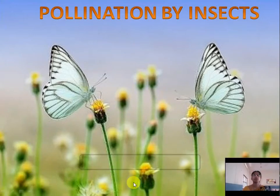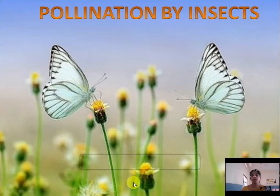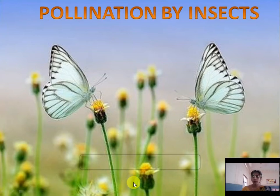Hi students, welcome to online class. In the last class we discussed pollination by wind and pollination by water — two agents. Today we are going to discuss another two agents of pollination, that is biotic factors, living factors: pollination by insect and pollination by animals.